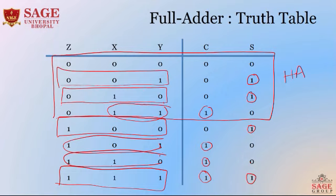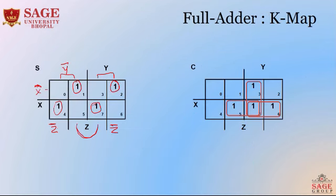The carry is generated when the number of ones is two or more. When two ones: X·Y·Z-bar, or Y·Z·X-bar, or X·Z·Y-bar — and also when all three are ones. So carry is generated when there are two or more ones among X, Y, and Z. This is the k-map representation of the full adder.